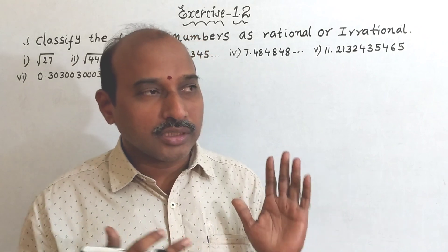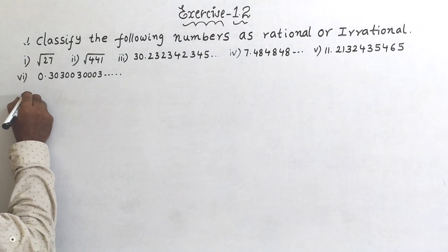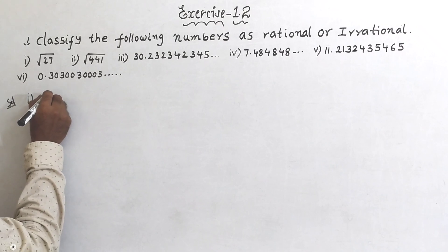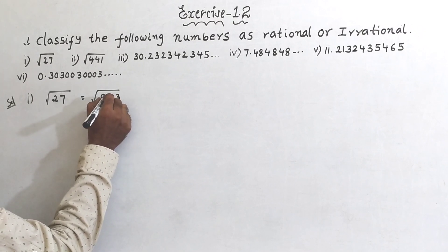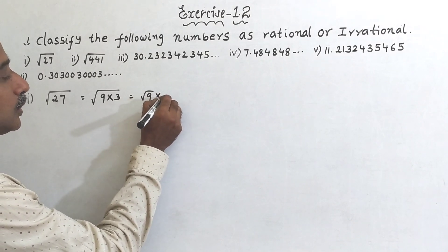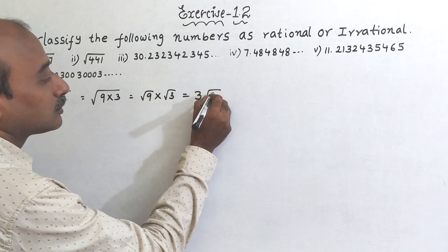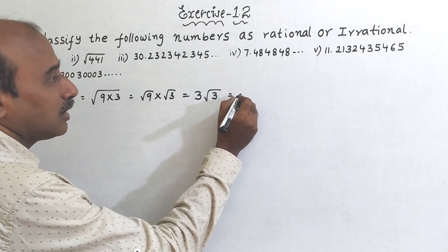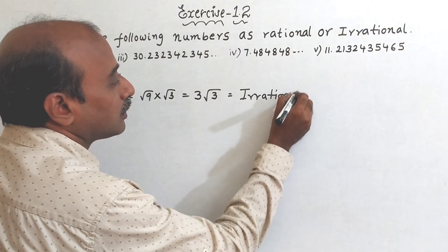Now we will see the first question. Roman (i): √27. You can write 27 as 9 × 3, so √27 = √9 × √3 = 3√3. We already know that √3 is an irrational number, so this is an irrational number.